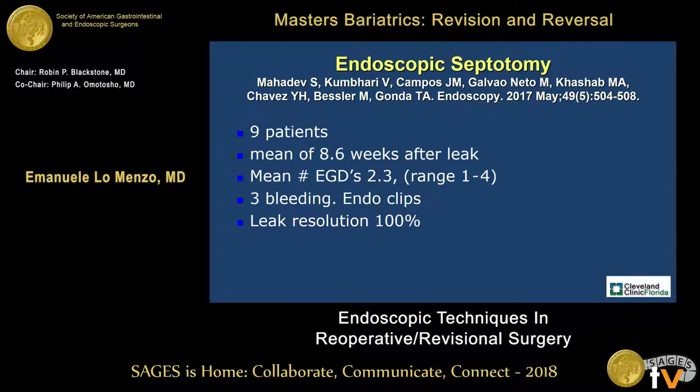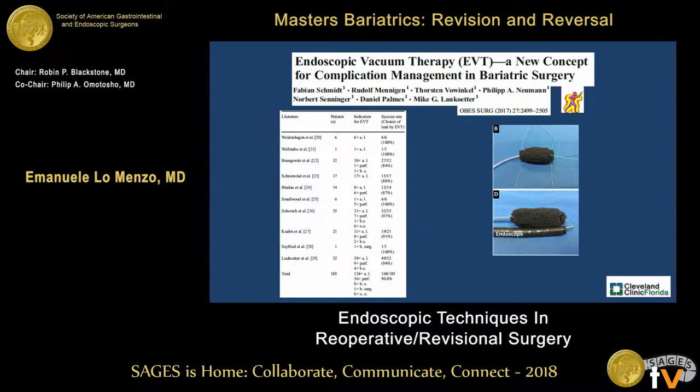Along the same line is the idea of doing a septotomy — instead of putting a stent, opening up the septum and draining the cavity directly into the stomach. This has been described by many authors. Manuel Galvao is one of the advocates of this procedure. In his study with nine patients, an average of 2.3 EGDs were performed with minor complications treated endoscopically, achieving complete leak resolution in 100% of cases.